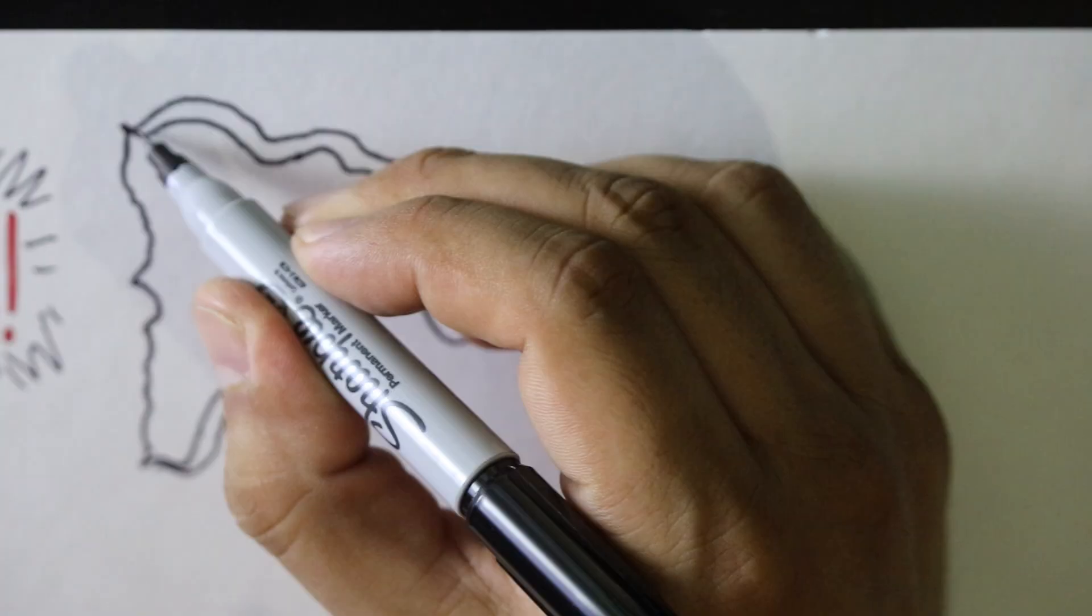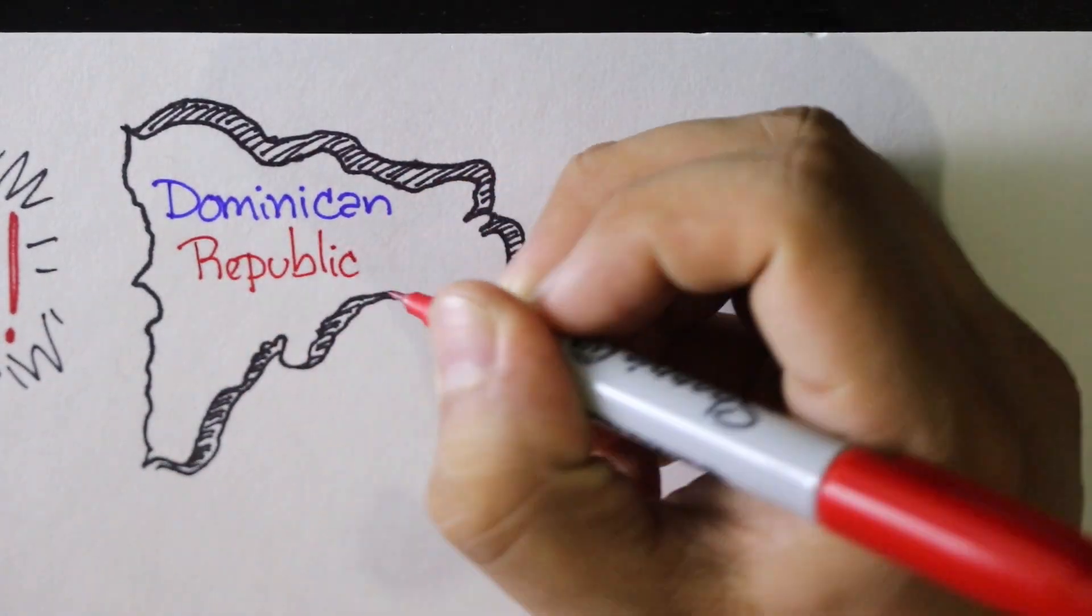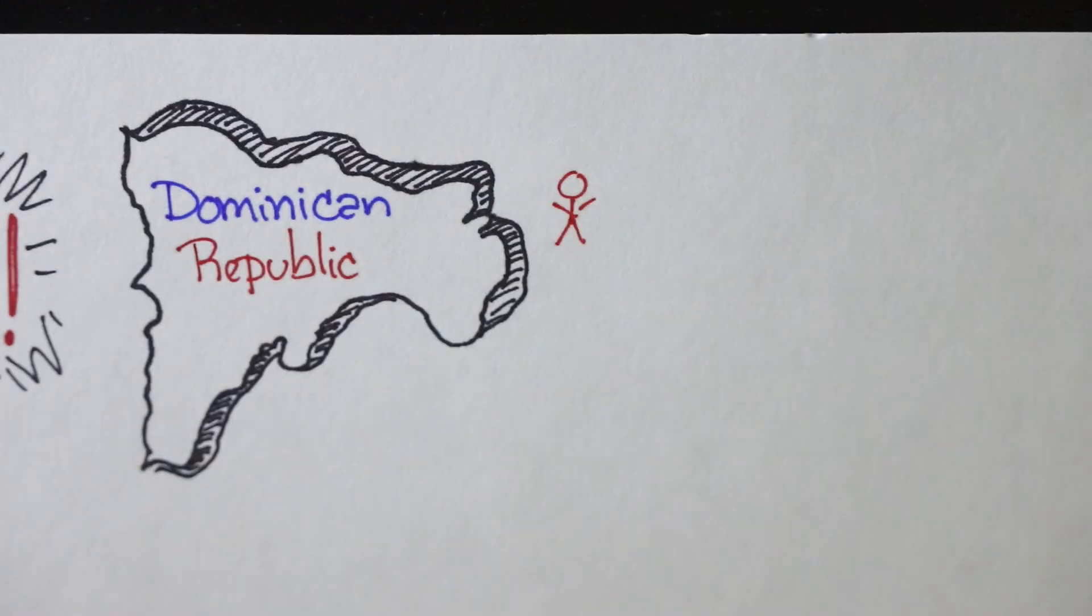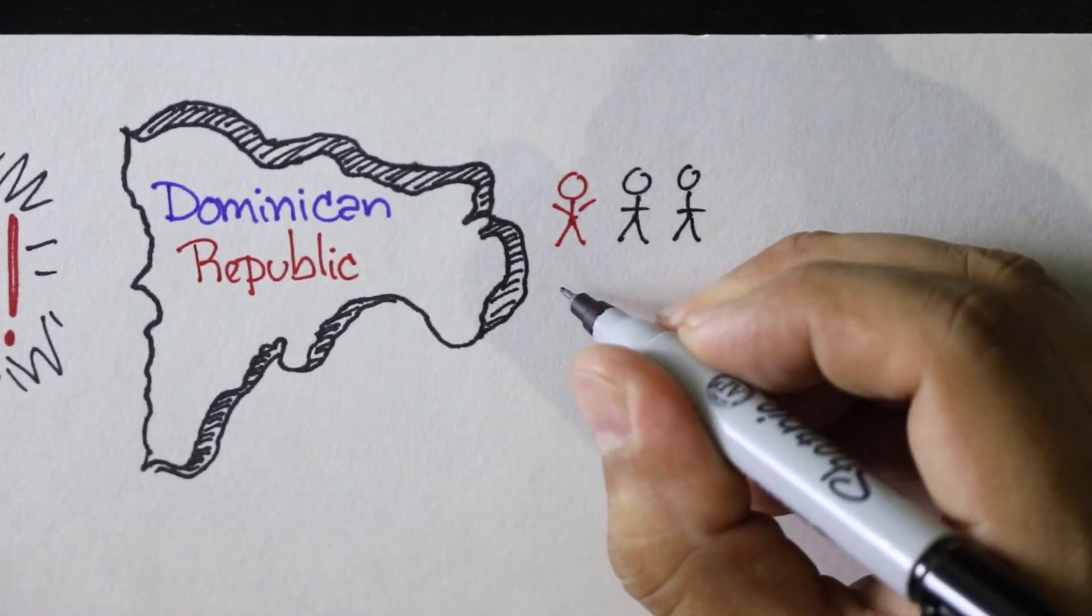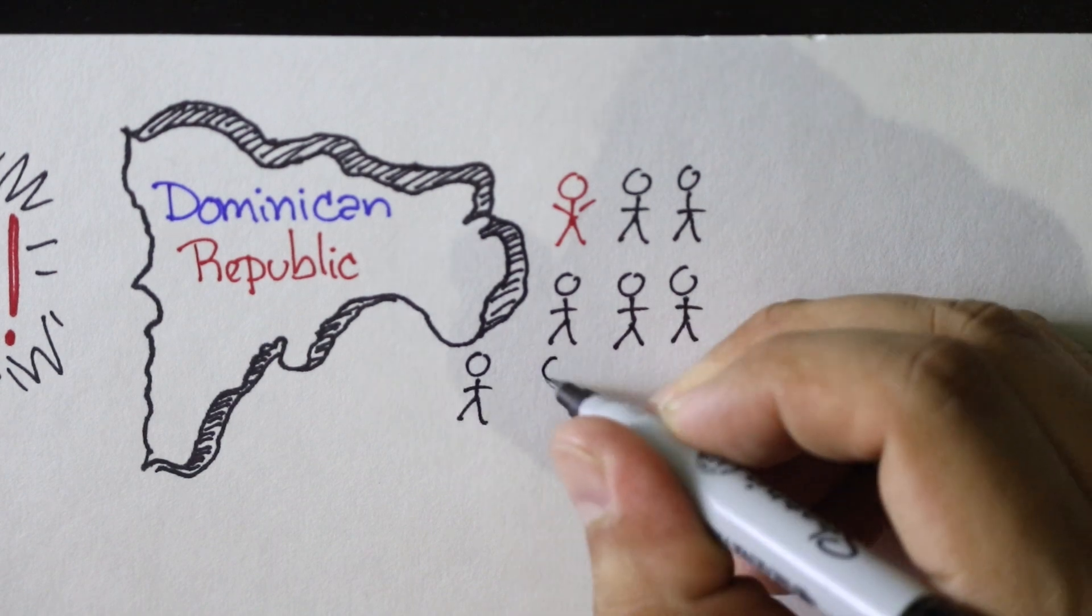In a small village in the Dominican Republic, approximately 1 out of 90 boys are born looking like girls at birth. At puberty, typically age 12,